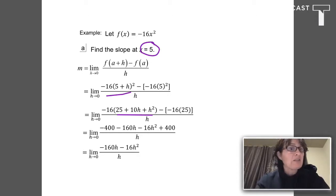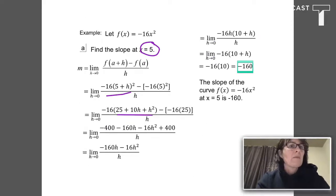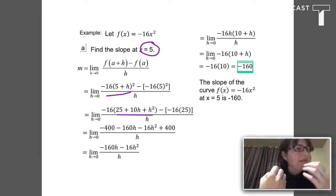I'm trying to take the limit as H goes to 0. If I plug in 0 right now, I have a problem. I'm going to have a 0 in the denominator. But I'm going to carry on. I can factor out that H. Once I can factor out and cancel the H, I can plug in my 0 for H and I get an answer of negative 160.